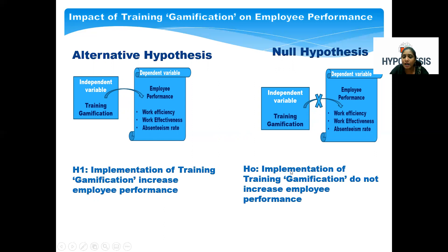Now let's see how to formulate the null hypothesis. H0: Implementation of training and gamification does not increase employee performance. The null hypothesis is just the opposite of the alternative hypothesis.